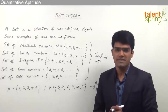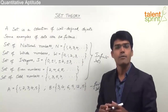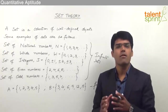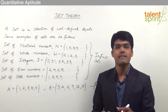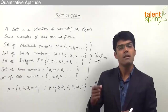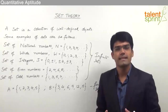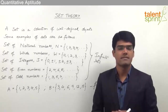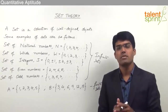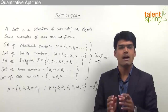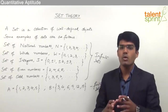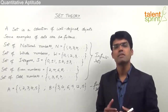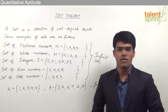An important point to understand is that a set need not necessarily have only numbers as its elements. For example, there can be a set of all letters in the English alphabet, where the elements are letters, not numbers. Likewise, there can be a set of all Indians or a set of Americans, where the elements are persons. So a set is a well-defined collection of objects — it can be numbers, letters, persons, or any other type of objects.